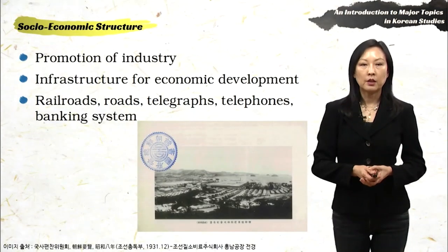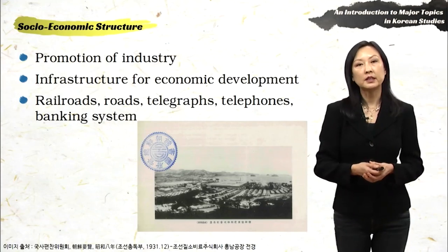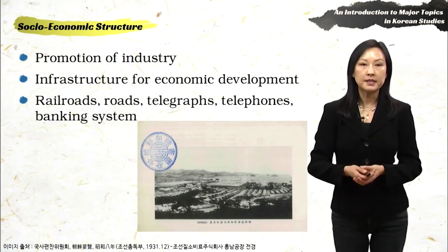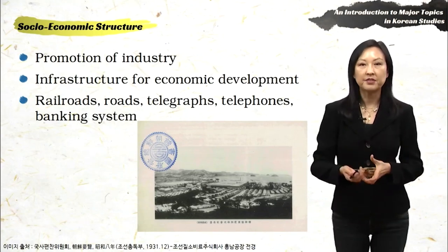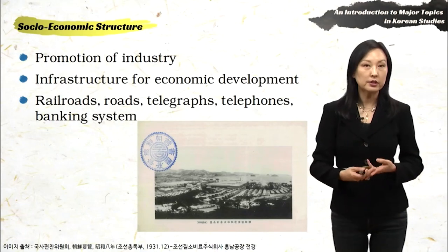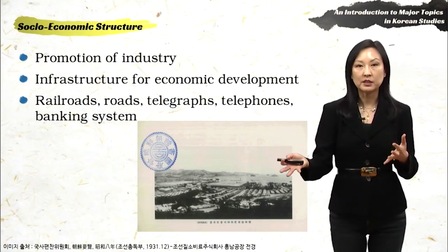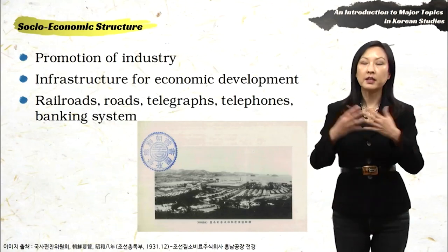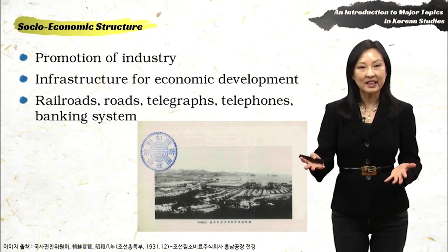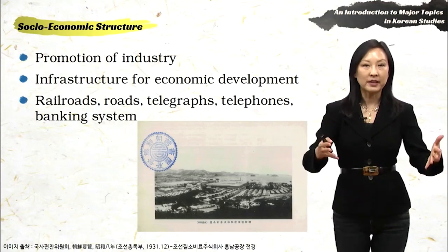For example, to promote industry in Korea, the Japanese needed fundamental basic infrastructure. Because in 1910 Korea was not very developed, the Japanese came in and developed railroads, roads, a communication system such as telegraphs and telephones, and a banking system. All of these things that did not exist before the colonial period, the Japanese developed — but the reason for their development was because the Japanese needed them to develop industry and agriculture in their colony.